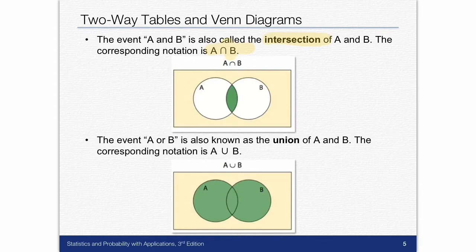The event A or B is known as the union of A and B, and the corresponding notation is A with a U and a B. It's not really a U because you don't put that straight stem on it, it's just the right side up horseshoe. A union B is what you say, and look at the diagram, it's all of it, the overlap and the non-overlapped parts. That is the union of A and B.